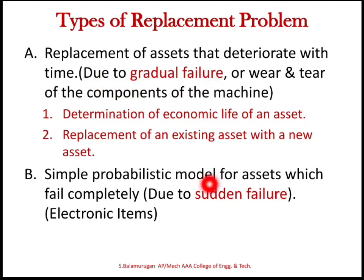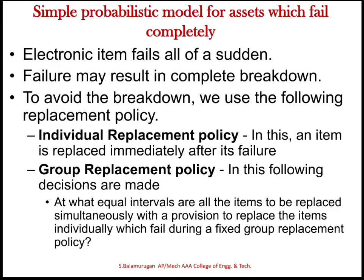The second method — simple probabilistic model for assets which fail completely — is related with electronic items, because in industry electronic items fail all of a sudden. This leads to complete breakdown. Breakdown means downtime: during this time there is no manufacturing process, so we may end up with losses. We have to avoid this breakdown.